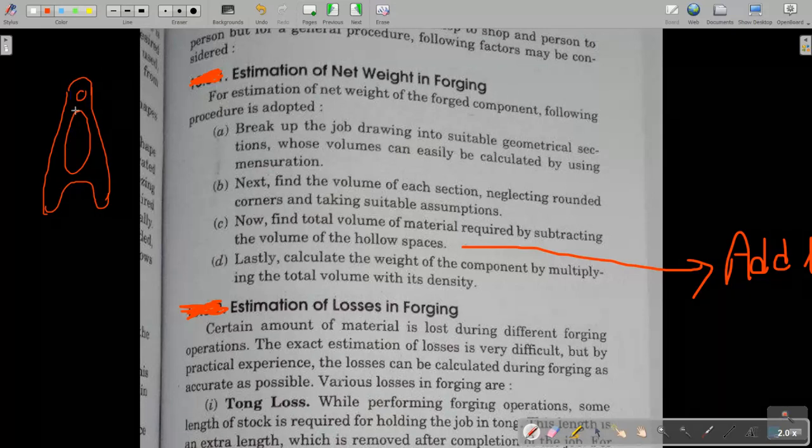How to analyze how much raw material is required? These are the four steps. First is break up the job into suitable geometrical sections, like here there is a circle, it is ellipse, and this is a rectangle. Break up that part into some known geometrical shapes that we know the area and volume of, like rectangle, circle, ellipse, parabola. Next, find the volume of each section and neglect the corners.